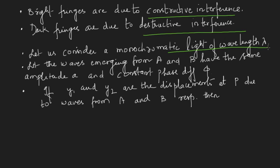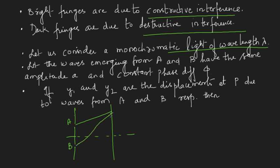An important point: I am taking monochromatic light of wavelength lambda. If I take white light, which has a combination of wavelengths, interference will happen but it is possible that the bright fringe of one wavelength may overlap with the dark fringe of another, and we will not be able to see the interference pattern clearly. Now let us take monochromatic light. The two coherent sources will interfere at point P, and let us take the amplitude displacements as y1 and y2, both having the same amplitude a and a constant phase difference phi.